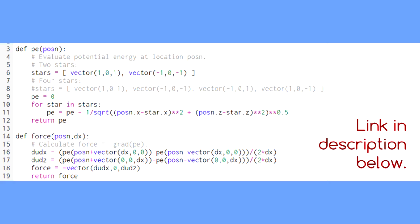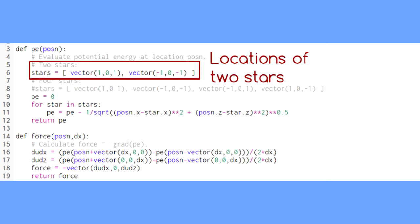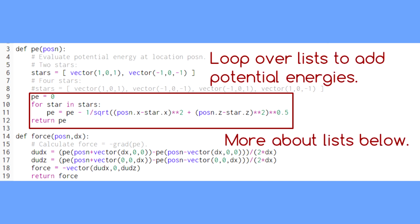Now that we have our rubber sheet code set up, we can start entering more interesting potential energies. For example, suppose you have a planet near two stars. We can use a loop to add their potential energies, giving us some interesting results.